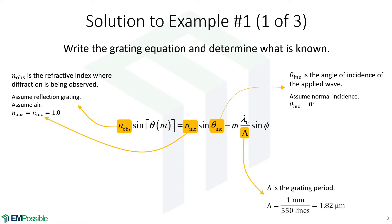Next thing, the grating period. We weren't directly given the grating period, but we know over the span of one millimeter, there's 550 lines. So one millimeter divided by 550 is about 1.82 microns. So that's the grating period.